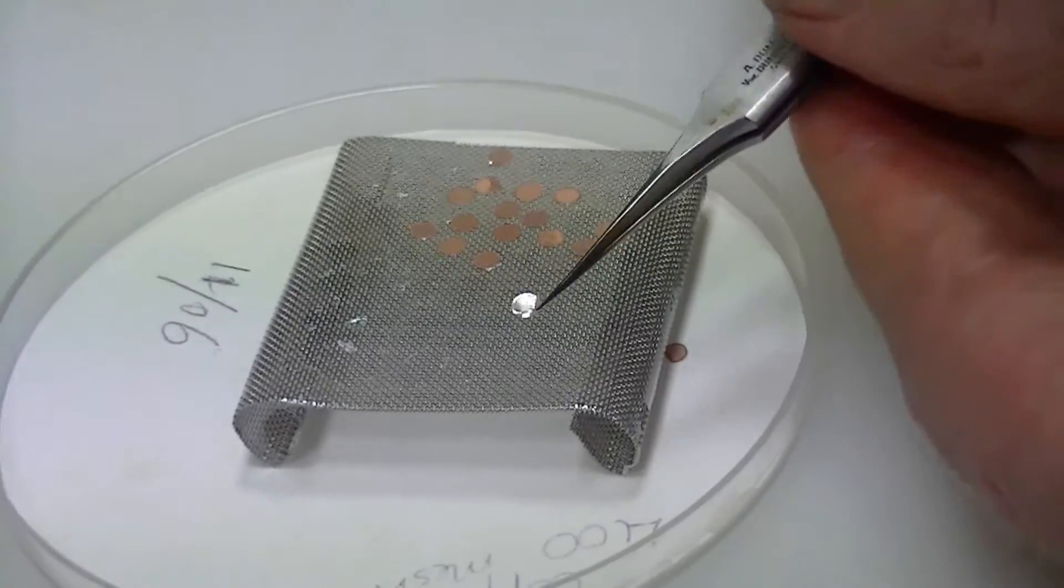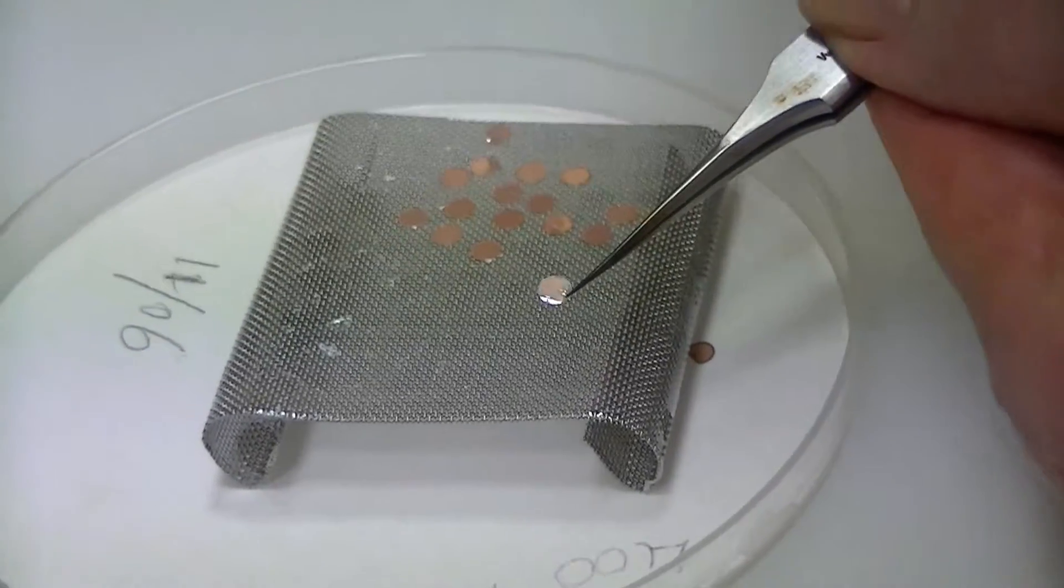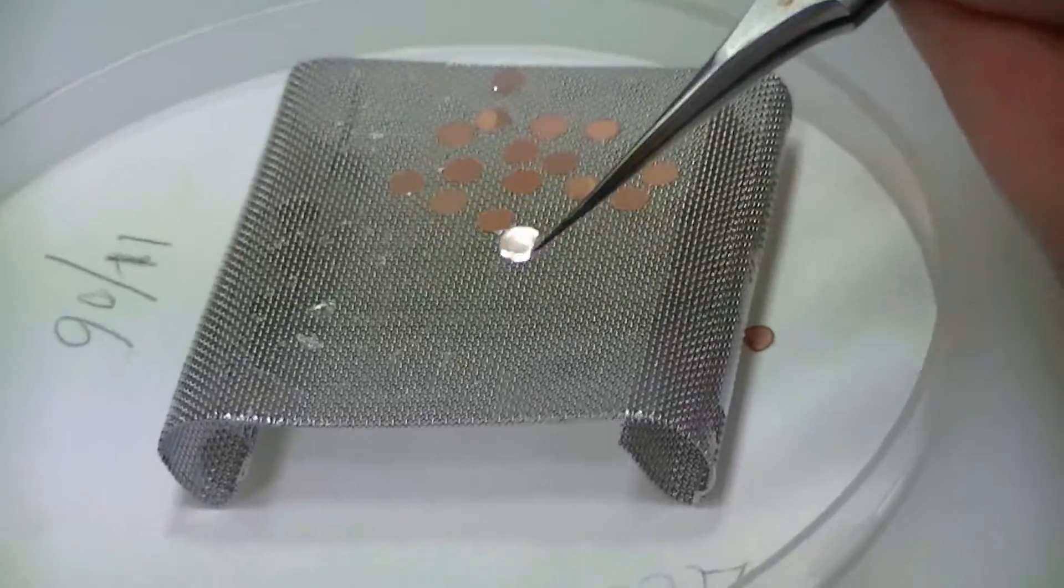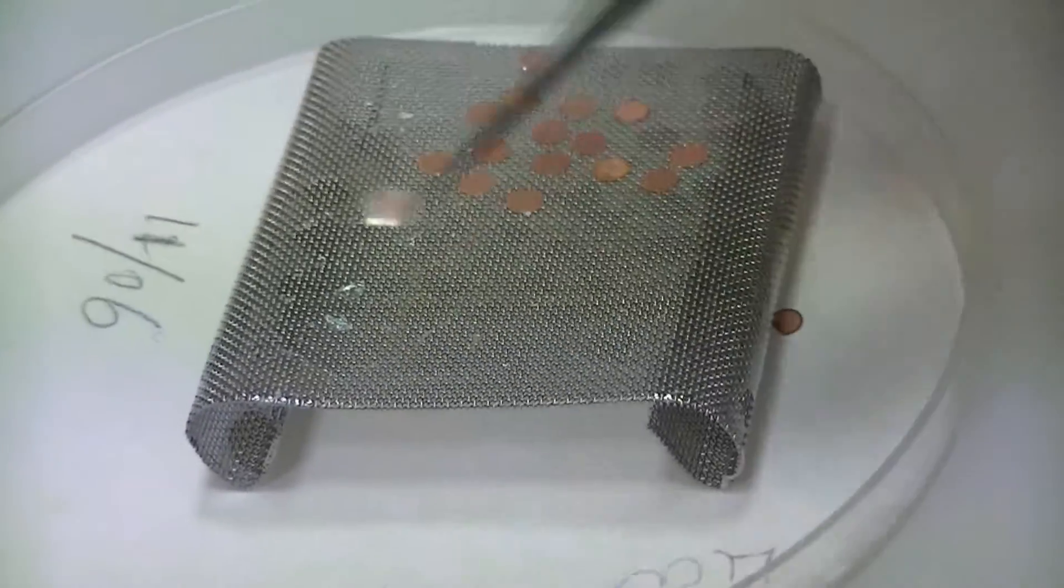The copper grid has been coated with plastic film and then carbon coated on top of that to make it conductive. We have to use forceps to hold the grid.